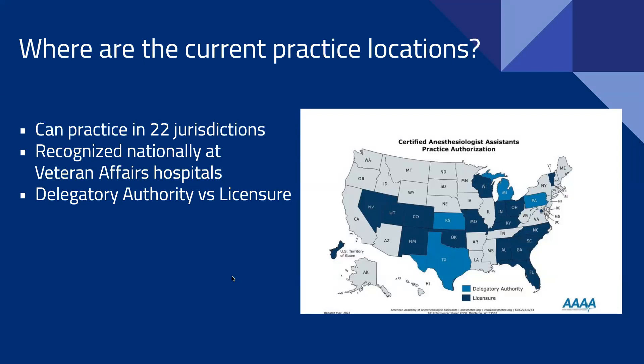On the map, the majority of states are dark blue and a few are light blue, differentiating how the delegation of anesthesia services provided by AAs are overseen. You have licensure as well as delegatory authority. In the light blue states, the roles of the anesthesiologist assistant can be delegated by an anesthesiologist, allowing them to practice under that model without going through the licensing boards or medical boards for those states.